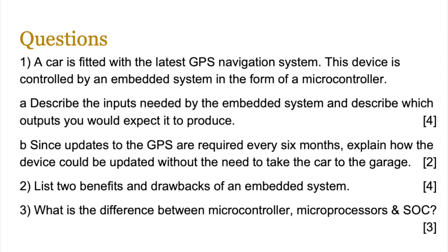A car is fitted with the latest GPS navigation system, controlled by an embedded system in the form of a microcontroller. Part A: describe the inputs needed by the embedded system and describe which outputs you would expect it to produce. Part B: since updates to the GPS are required every six months, explain how the device could be updated without the need to take the car to the garage or manufacturer. You should also be able to list two benefits and two drawbacks of an embedded system, and explain the difference between microcontrollers, microprocessors, and system on chips. That's all for this lesson — if you found anything difficult, feel free to get back to me, and I'll see you in the next one.